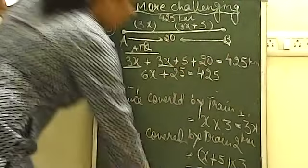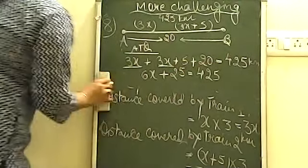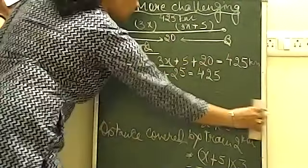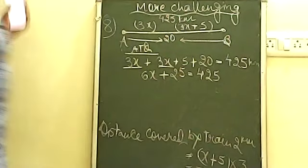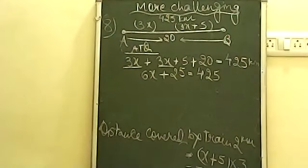Solving: 6x = 425 - 35 = 390. So x = 390/6 = 65 km/h. The value of x is 65 km/h.